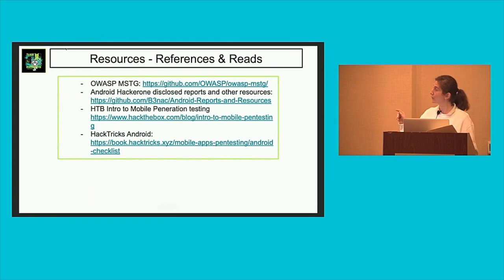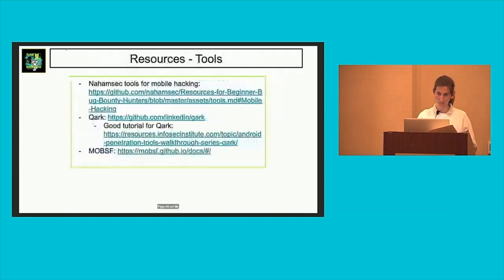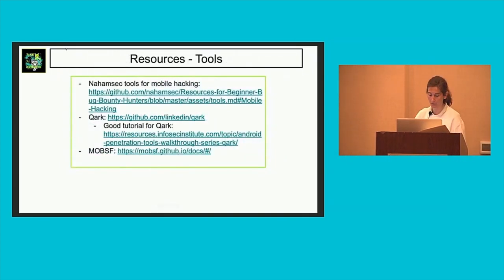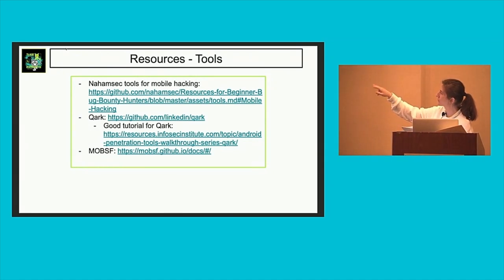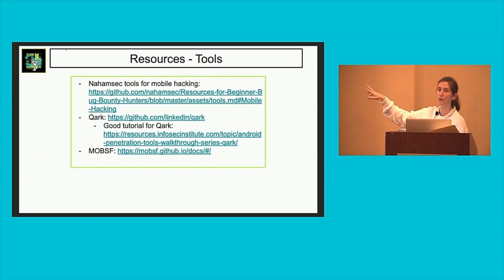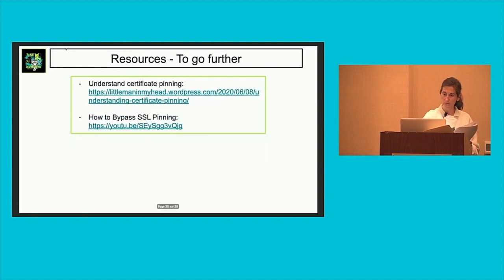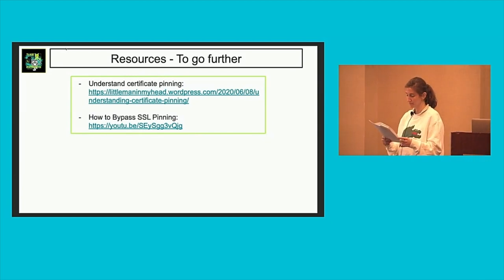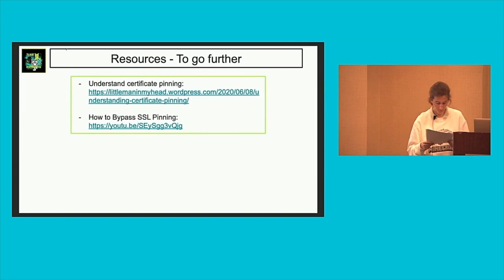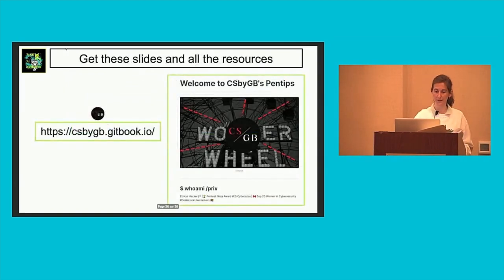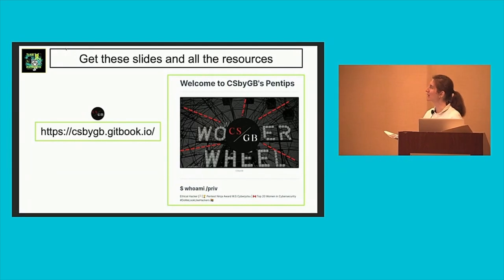Here are some good reads. The OWASP MSTG is actually the reference for mobile app pen testing. Here is also a list of tools — the first one is a huge list from NAMSEC of different tools for mobile app pen testing — as well as Quark and MobSF, which I mentioned earlier. And as promised, here is a resource for certificate pinning to go further.